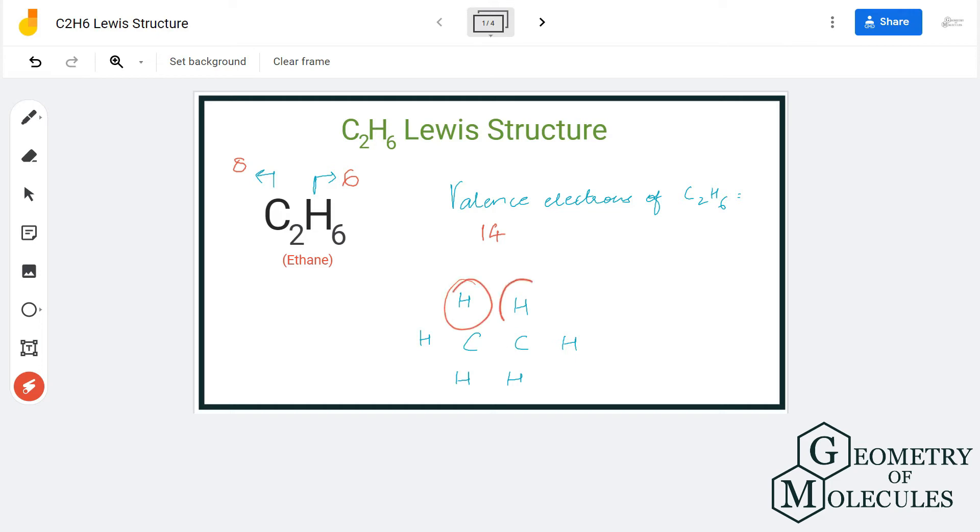Once we have done that, place two valence electrons between each pair of atoms to show the bond, like between C and H and between C and C also.